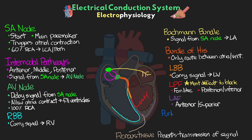Finally, we have our Purkinje fibers. These are coming off each of the bundle branches and fascicles — they are the cells that really connect with the myocytes. You'll see them as additional extensions coming off the right bundle branch, as well as the left anterior fascicle and the left posterior fascicle, giving it that fan-like appearance.